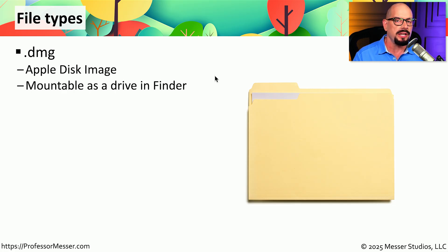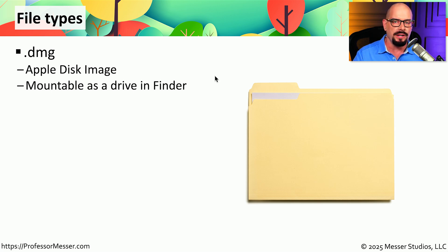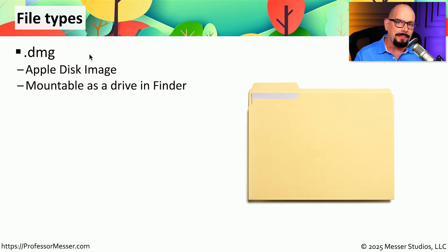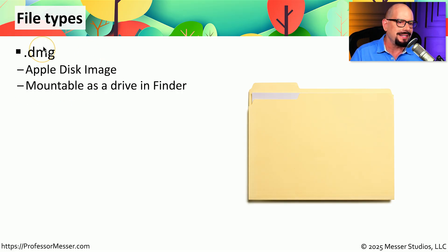For example, if you're using Microsoft Word, then you've probably seen a .docx extension. If you have compressed files, they may be compressed with zip and you have a .zip extension. In Mac OS, one important extension you need to know about is the DMG extension — an Apple disk image. This is very similar in functionality to an ISO image, but specifically made to work on a Mac OS device. If you were to mount that DMG file, it would appear as a drive inside of your Apple Finder.